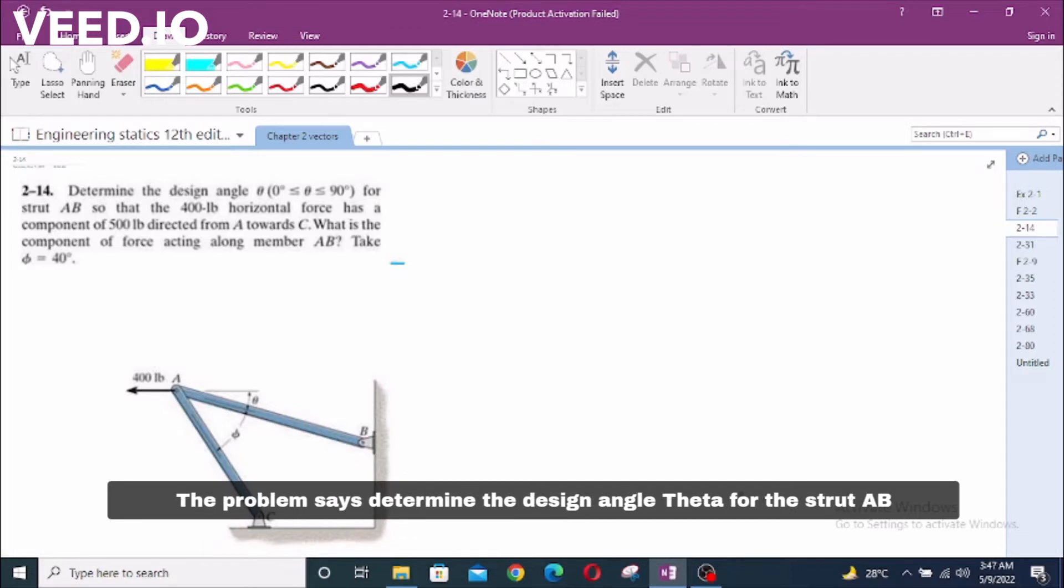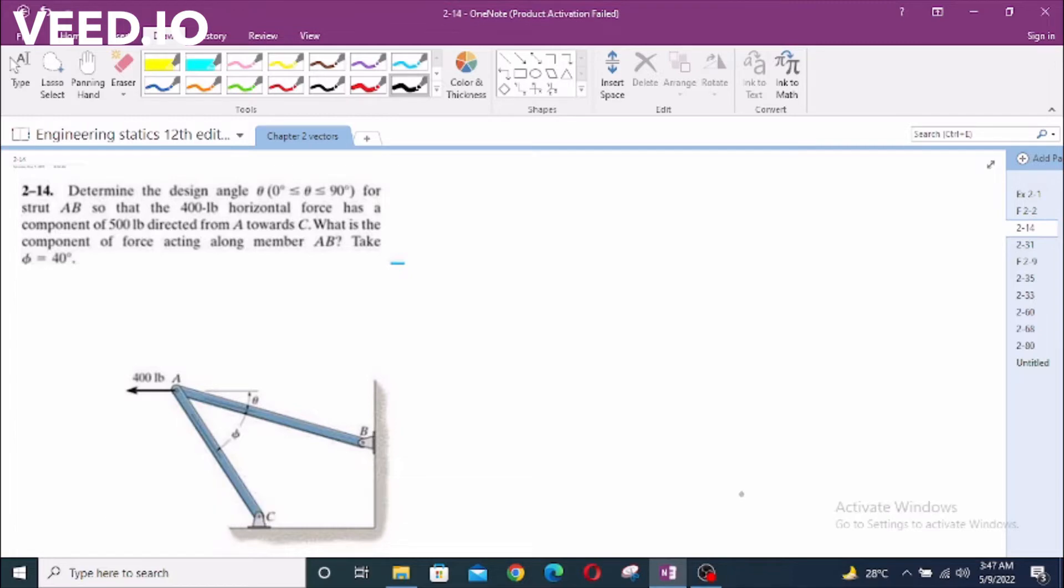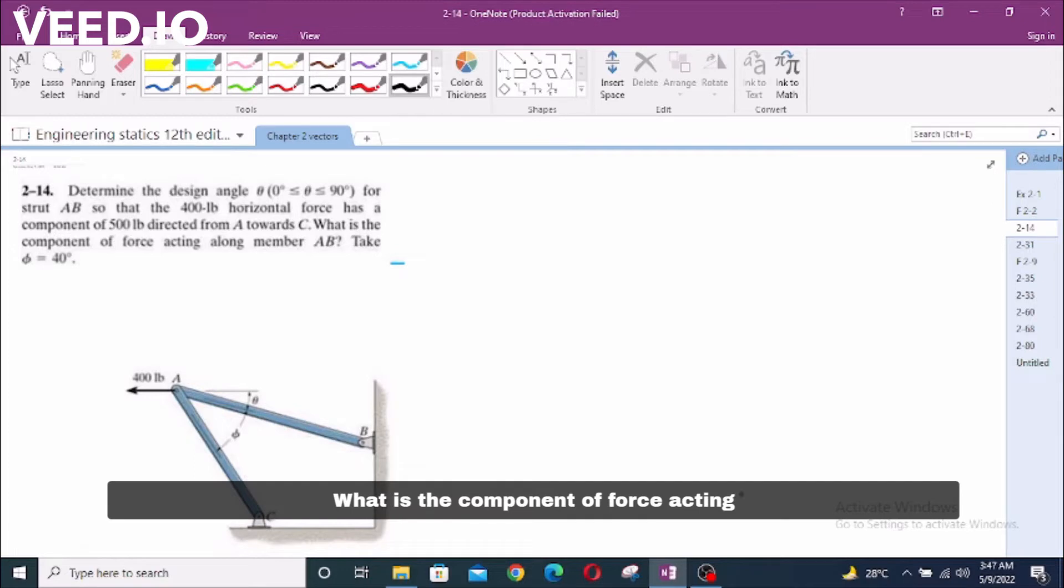The problem says, determine the design angle theta for AB so that the 400 pound horizontal force has a component of 500 pounds directed from A toward C. What is the component of force acting along member AB? Take phi equals 40 degrees.